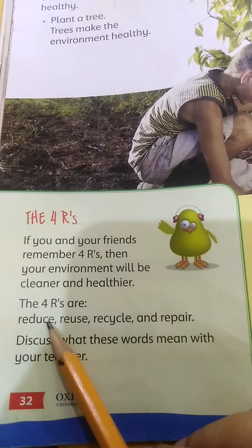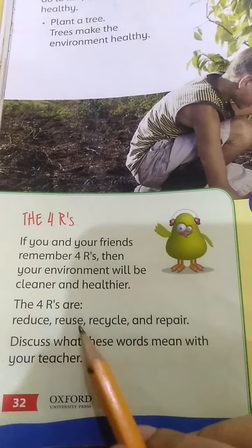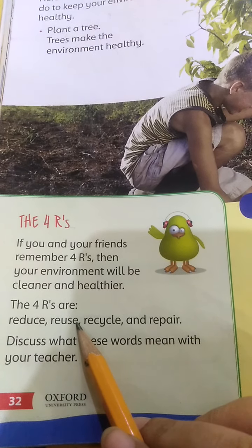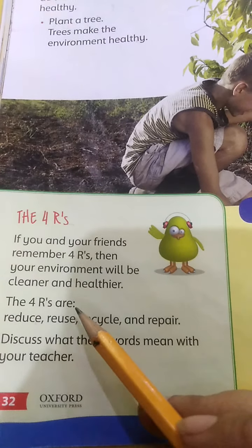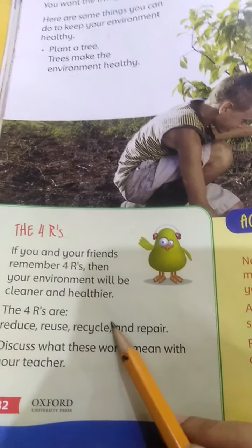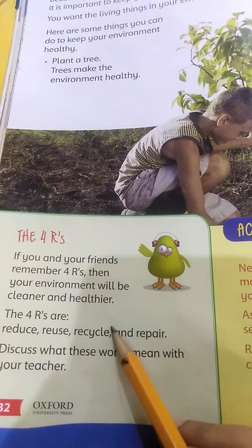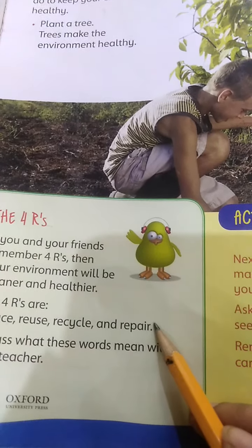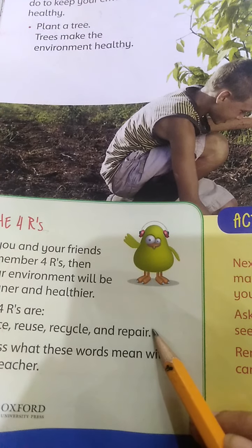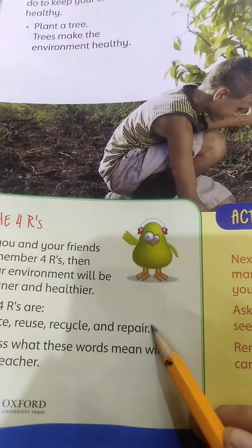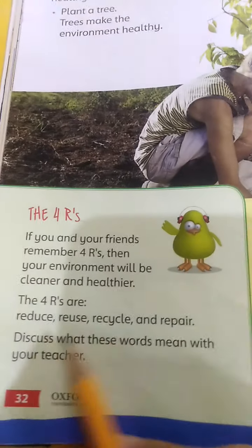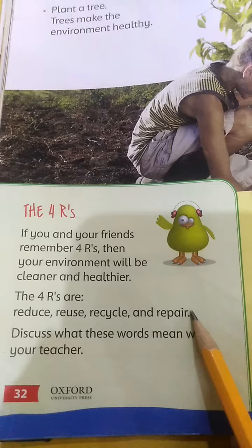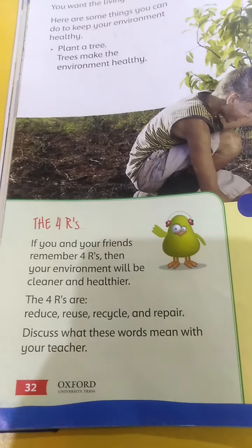Reduce — use less and less. Reuse — if you can use a thing again, then reuse it. Recycle — use a thing again in a new form. Repair — if you have a broken thing, then repair it again. We can use these four Rs as a rule. If we remember them, then our environment will be clean and healthy.